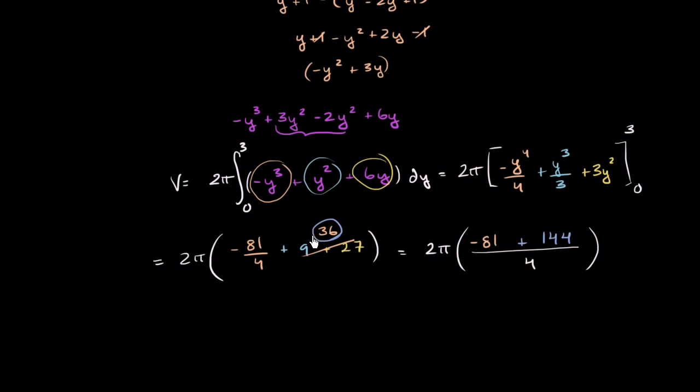30 times 4 is 120, plus another 24 is 144. So you have 144 essentially minus 81. So this is going to be equal to 2 pi times, and actually, I can even simplify it a little bit more. We have a 2 here and a 4 there. So divide the numerator and the denominator by 2. So you're going to have pi times, this is going to be 44.